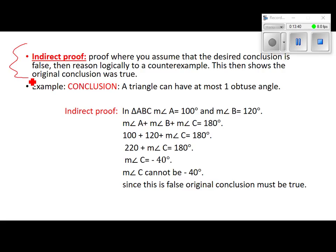Write down just this top part. You can write down the example if you want, but we're not going to do a whole lot with indirect proofs. You are going to have to know a little bit about an indirect proof, especially how it starts.